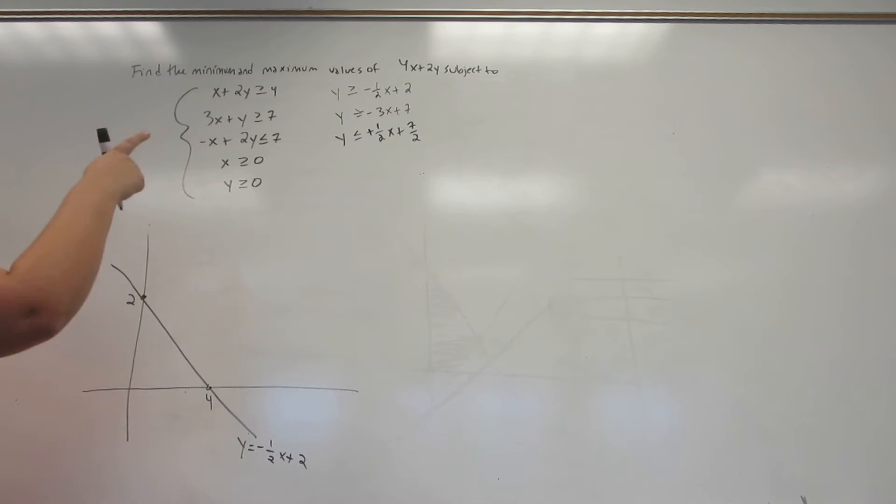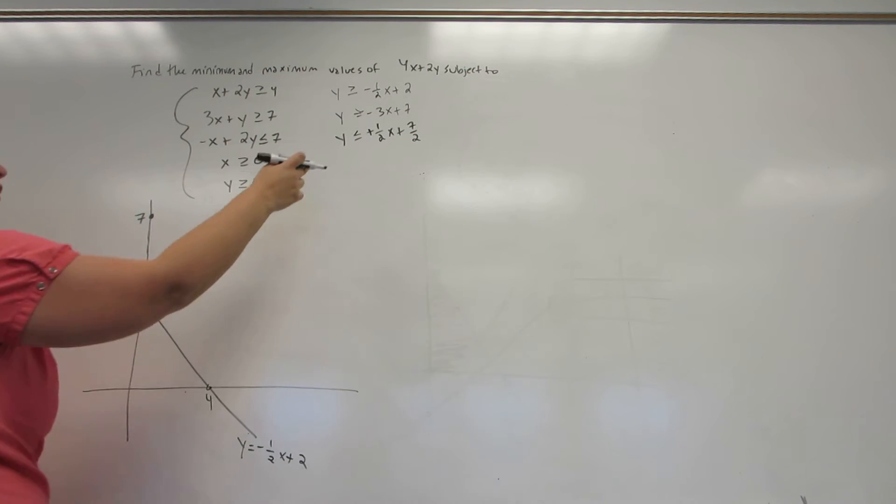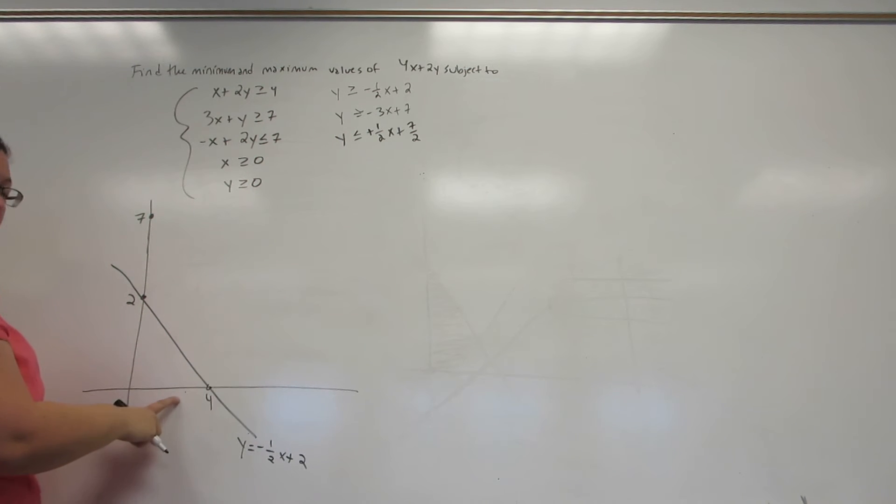Now, the next one is Y equals negative 3X plus 7. It has a Y-intercept of 7. And the reason that I wanted this X-intercept of the previous one is the best way to graph this is to decide if the X-intercept is to the left or to the right of the one I already have.